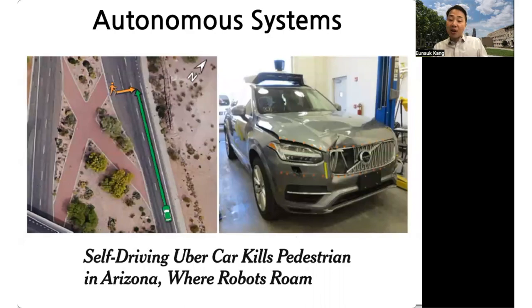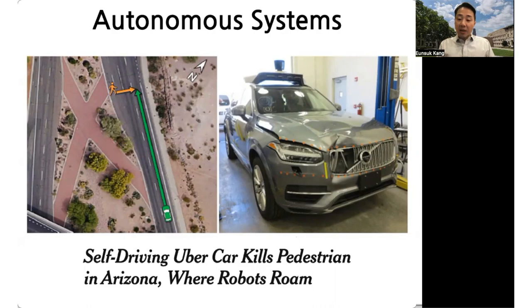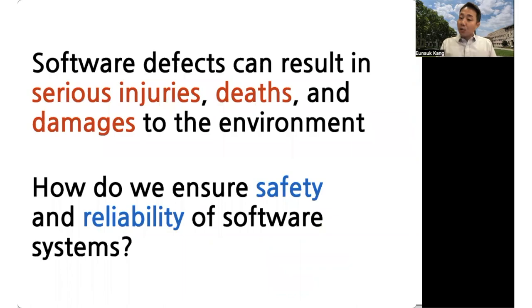Many of us have heard about accidents involving machine learning and AI-based systems such as self-driving cars. AI has great potential to improve the quality of our lives, but there are also increased risks of failure in these systems. One major challenge is that it is often difficult to predict when something goes wrong with AI, and it is much harder to build systems that rely on machine learning. The overall question I'm interested in is: given that a failure in these systems can result in serious consequences, how do we ensure safety and reliability?